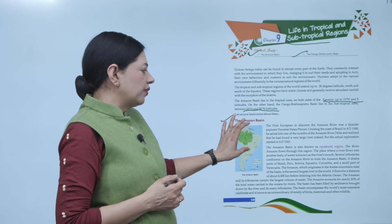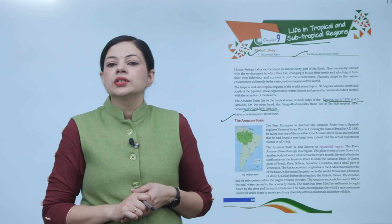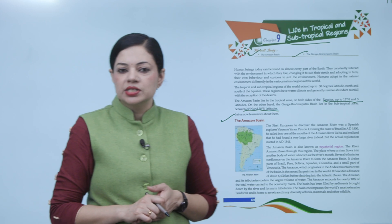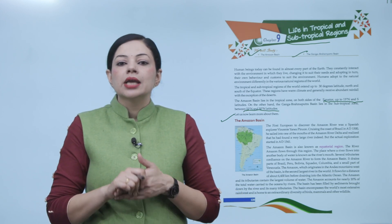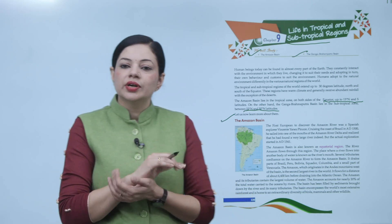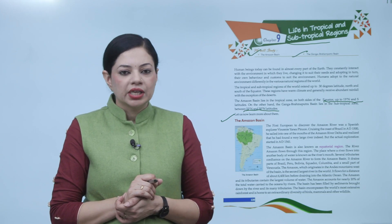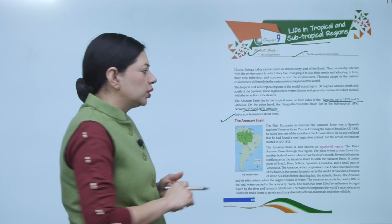This is the location of Amazon Basin. The first European to discover the Amazon River was a Spanish explorer Vincent Yañez Pinzón. Crossing the coast of Brazil in AD 1500, he sailed into one of the mouths of the Amazon River Delta and realized that he had found a very large river indeed. But the actual exploration started in AD 1541. Amazon Basin is also known as equatorial region.